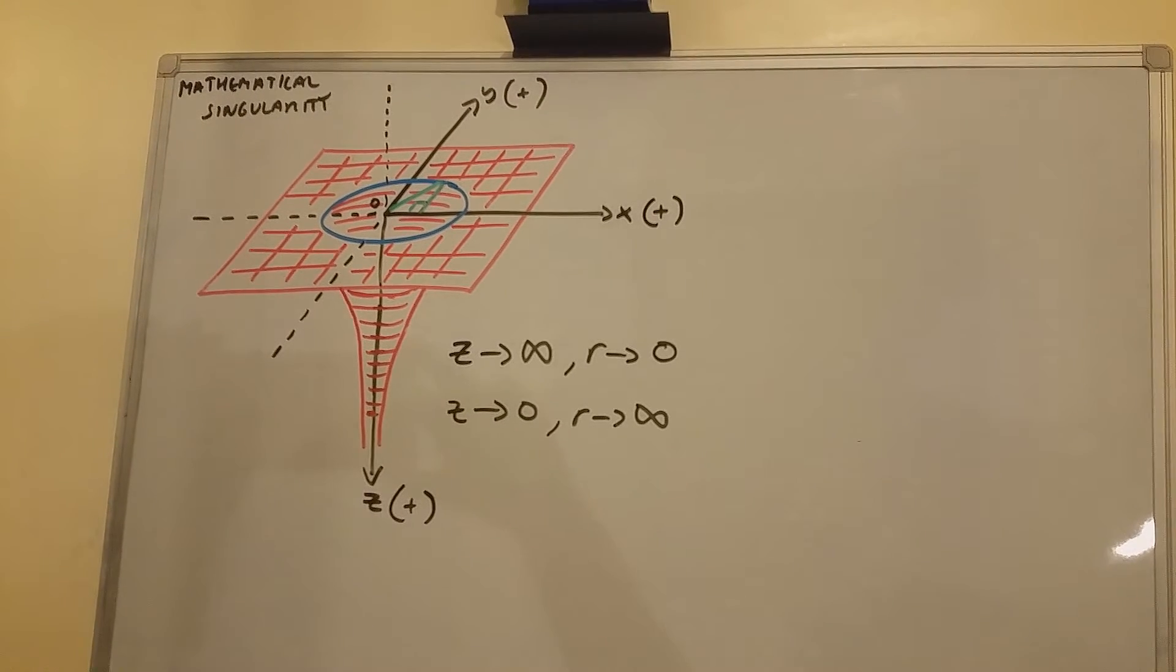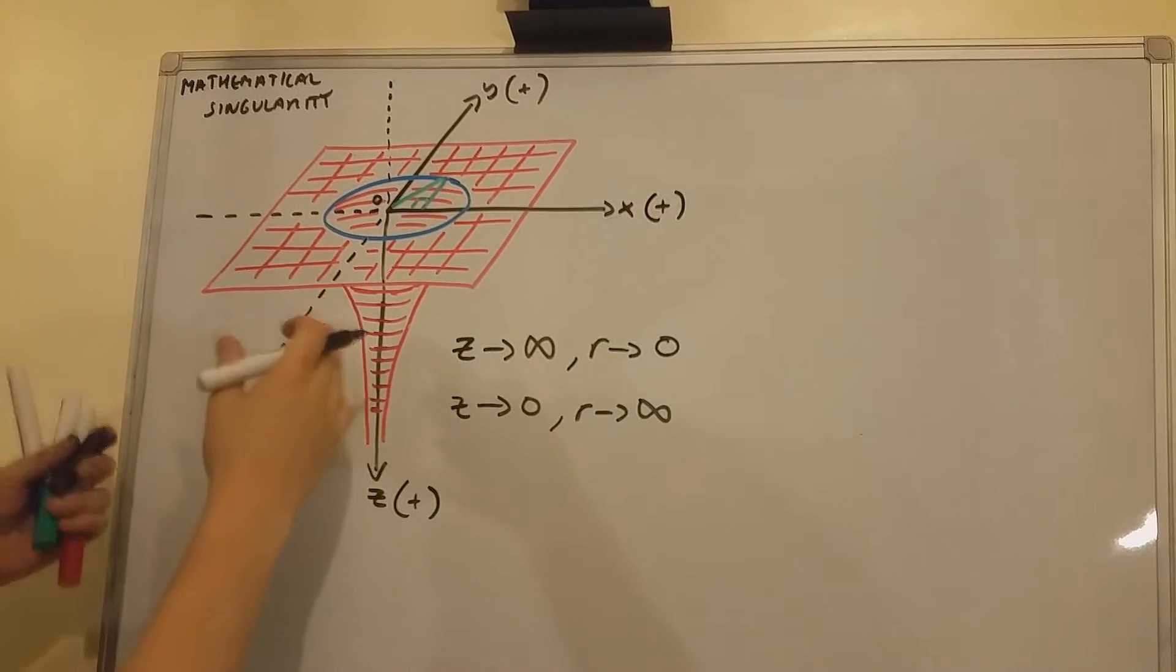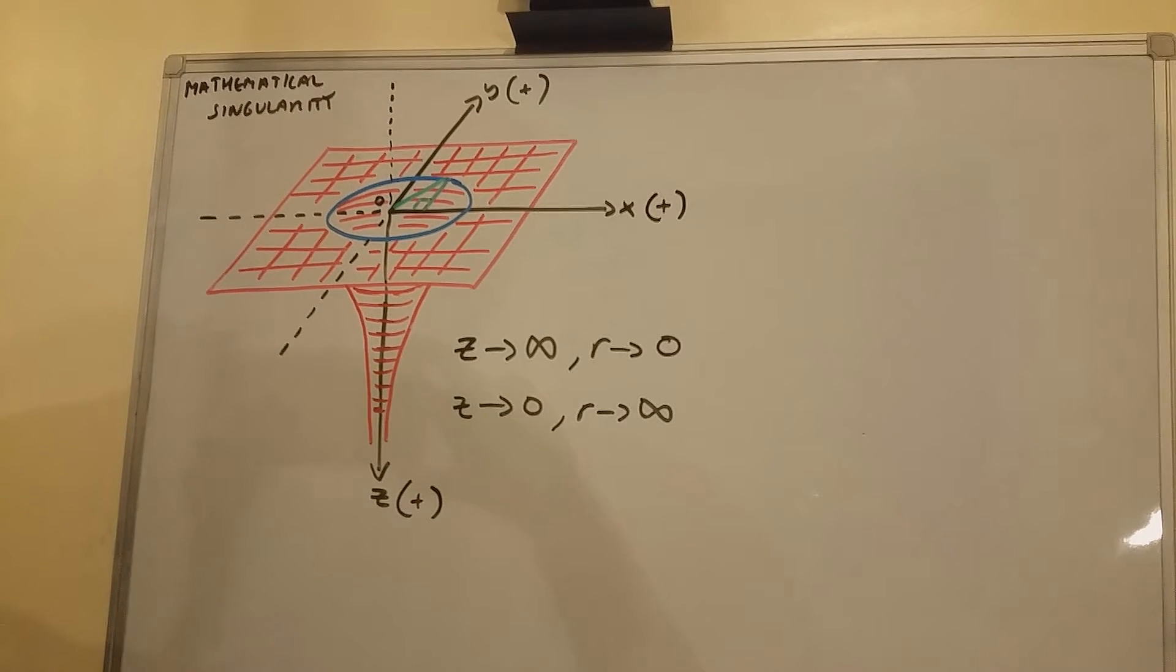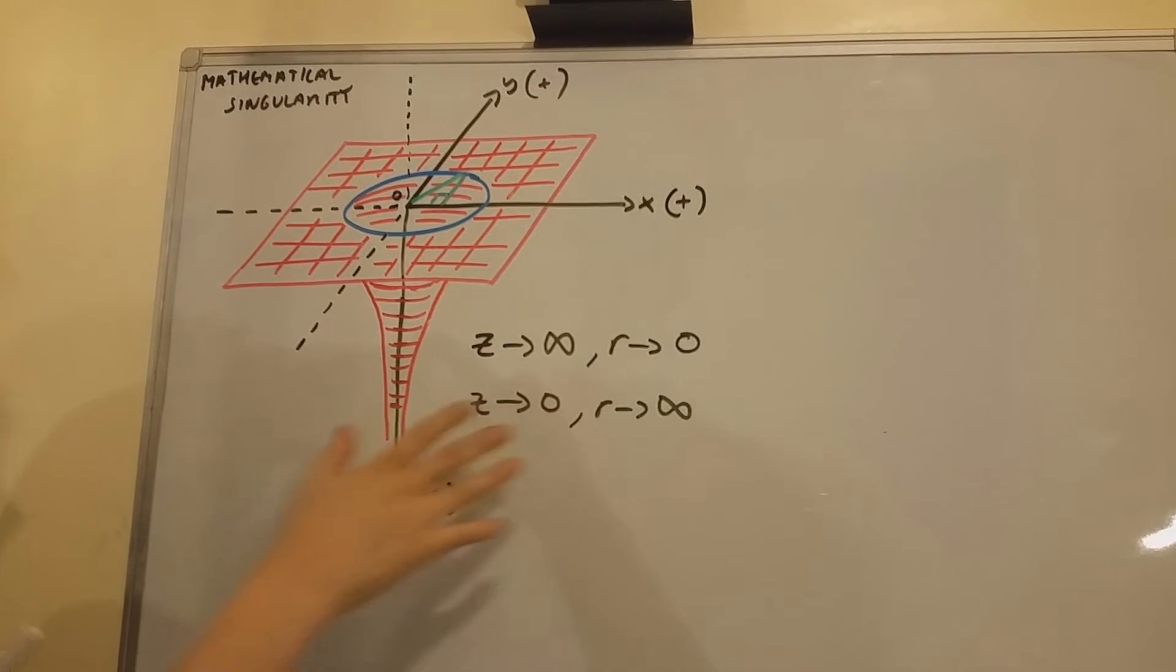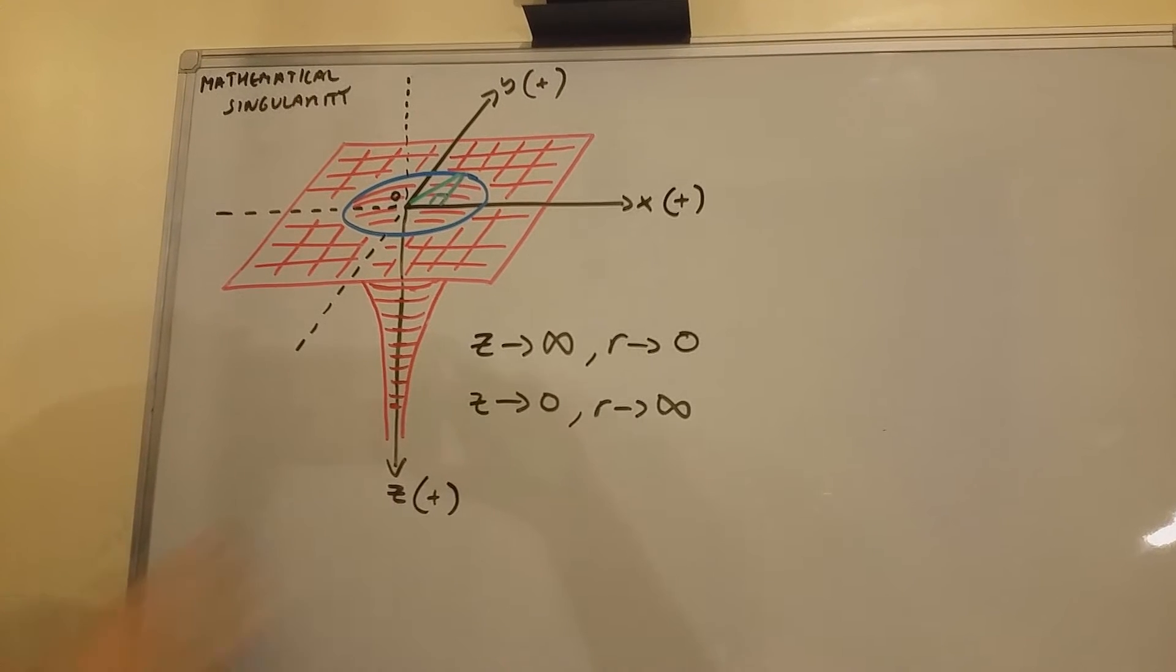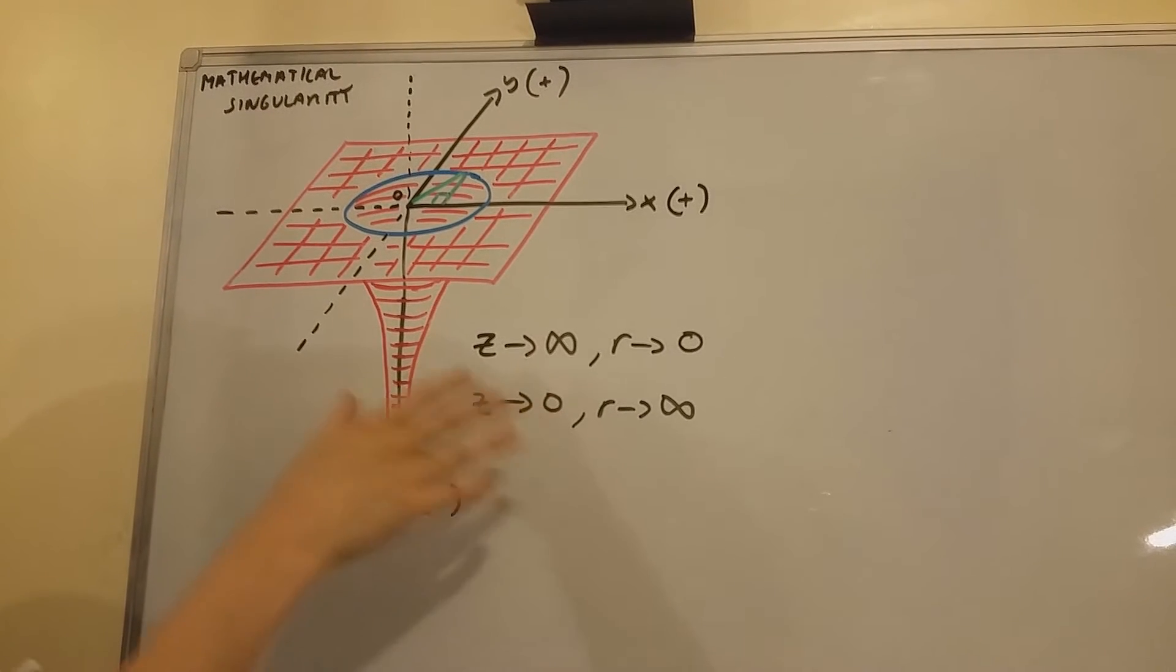Now you have to imagine the z equals zero plane as an asymptote. It means that z can only approach zero. It's never actually going to reach zero.